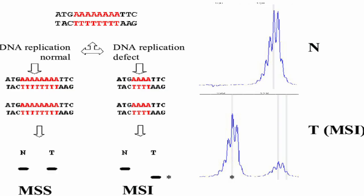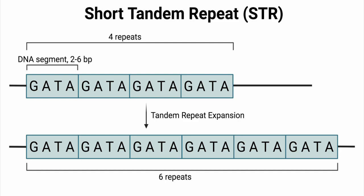Another type is microsatellite instability, or MSI. Microsatellite instability is a genetic condition characterized by changes in the length of repetitive DNA sequences known as microsatellites. These are also sometimes referred to as short tandem repeats, or STRs, as they are repeating sequences of one to six base pairs found throughout the genome. These sequences are involved in maintaining genome stability and play a role in DNA repair and recombination processes.